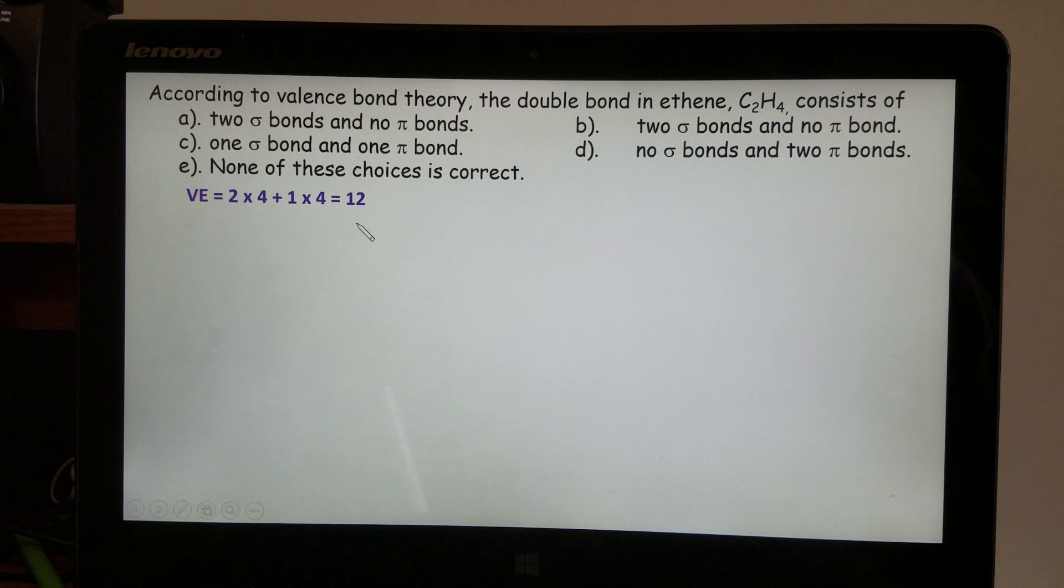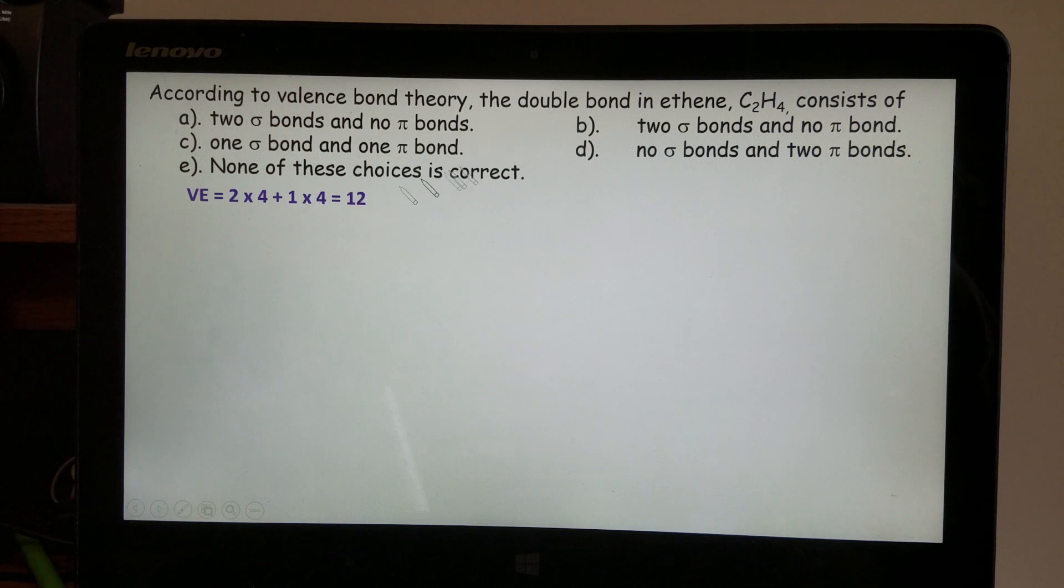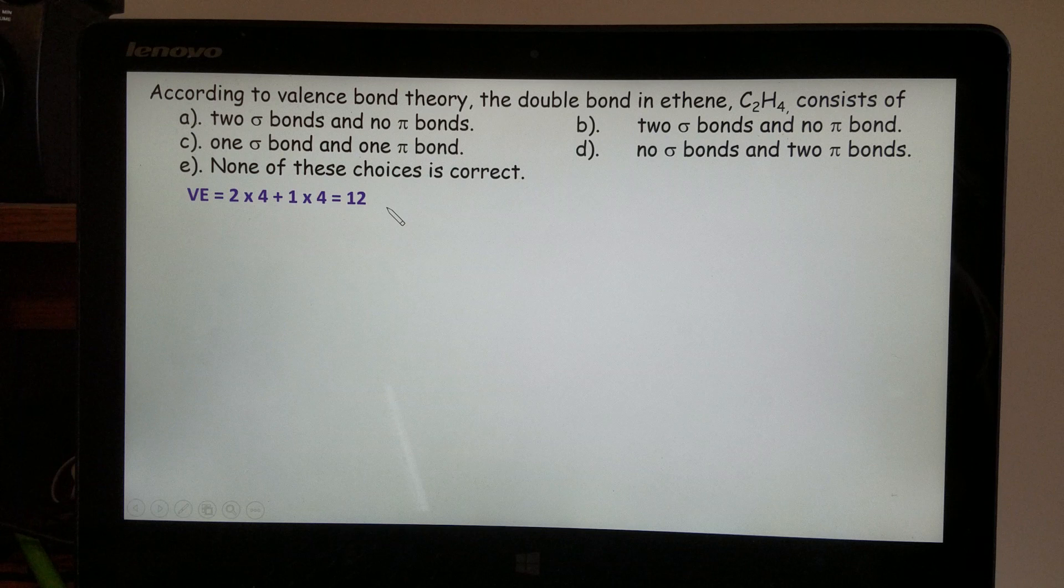First, we have to find out the total number of valence electrons. We have two carbon, each carbon has four valence electrons, then we have four hydrogen, each hydrogen carries only one valence electron, then that's a total of 12 valence electrons.